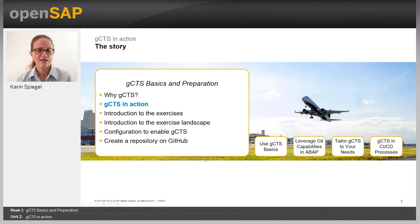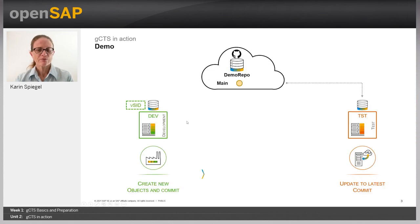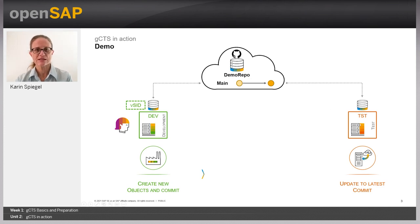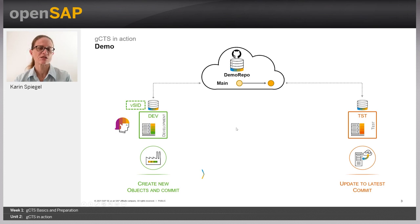You will get an explanation for all the details in follow-on units. We're going to work with a system landscape consisting of two systems: a development system and a test system. What's important now is that we have a development system where we will create something new and commit it to a demo repository, and a second system — TST — where we will later consume the new content. All details about setup, repository management, and ABAP connections will come in follow-on units.